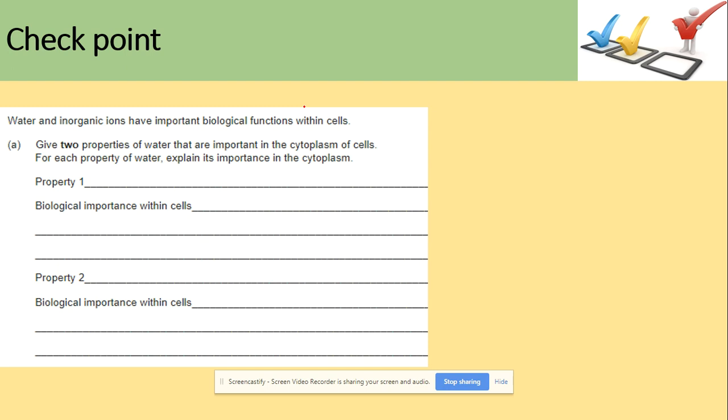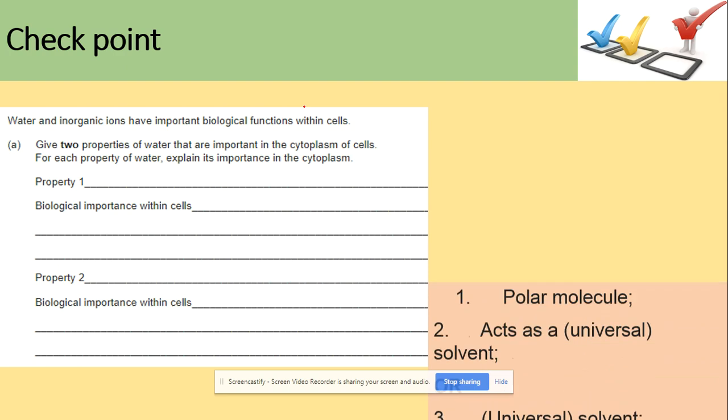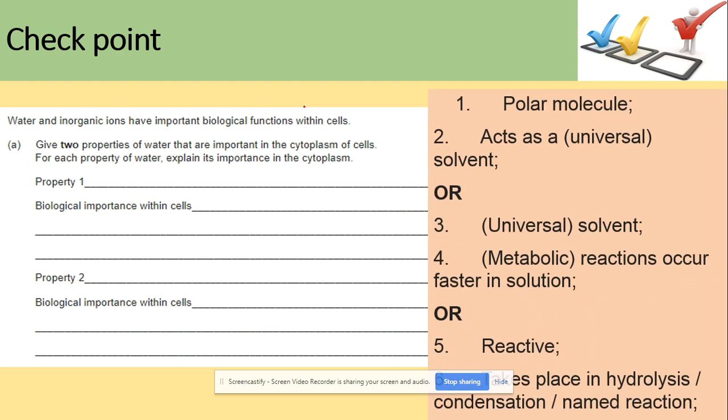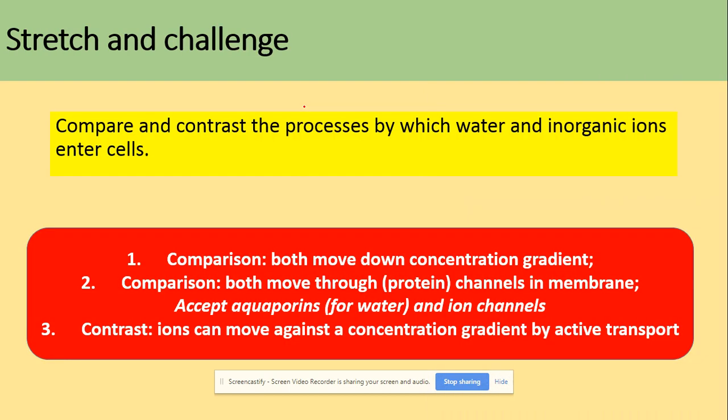A practice question: give the properties of water that are important in the cytoplasm of cells. Linking to properties — water acts as a solvent, so reactions can take place faster in solution. It is also reactive, so hydrolysis and condensation reactions can take place. Another question asks you to compare and contrast the processes by which water and inorganic ions enter cells.